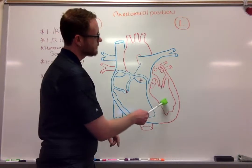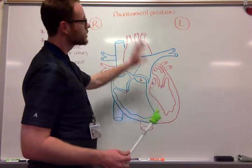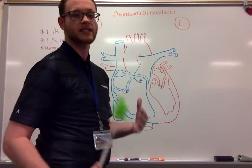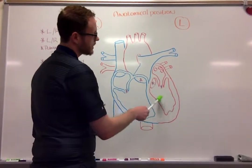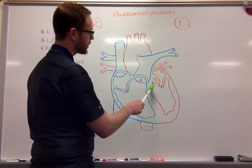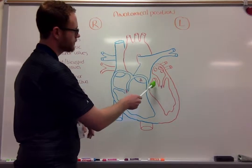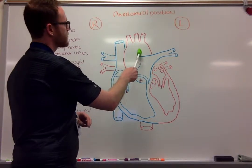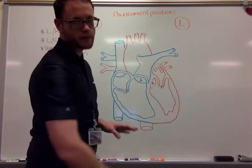This left ventricle is a very powerful ventricle because it is responsible for pushing that blood throughout the body systemically. Once we're in the left ventricle, it's going to pump it through our last semilunar valve — our aortic semilunar valve — into our aorta, and then that is going to be pushed systemically, throughout the body.